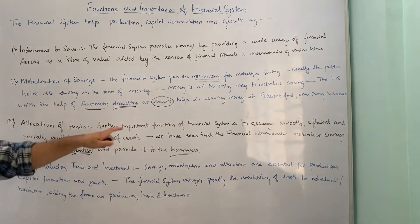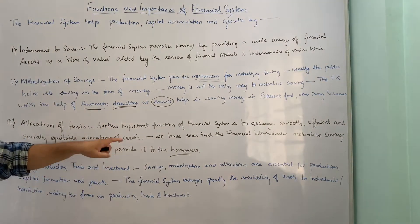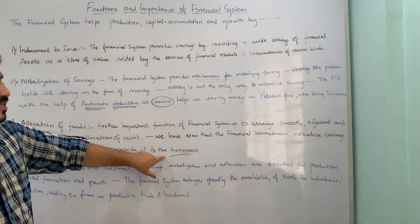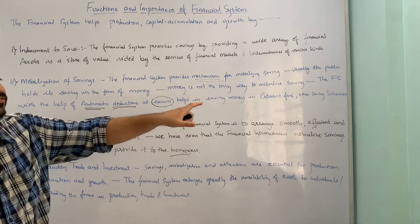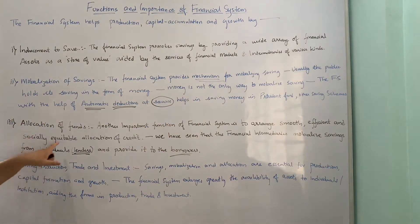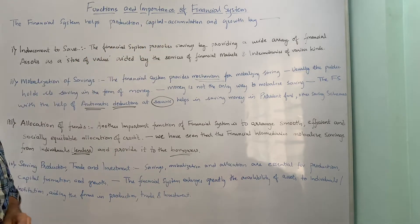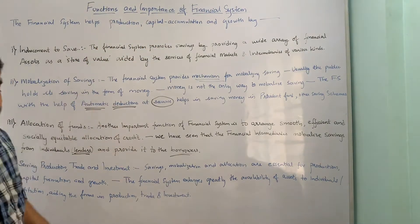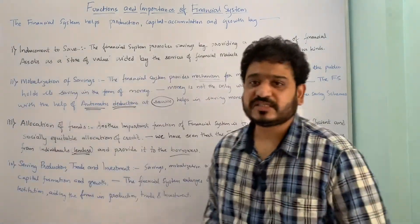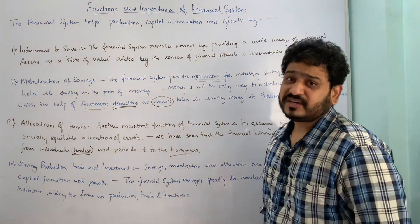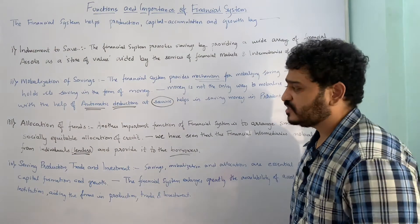The allocation of money or credit is carried out smoothly, efficiently, and socially equitably only with the help of a financial system. That is why this point is of immense importance when we study the importance and functions of a financial system.